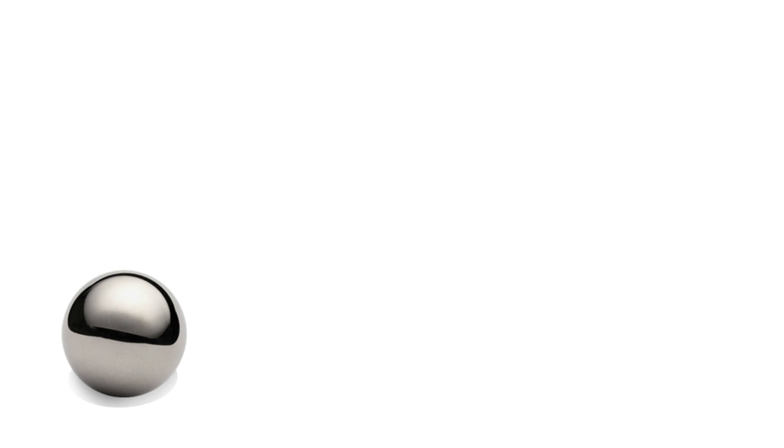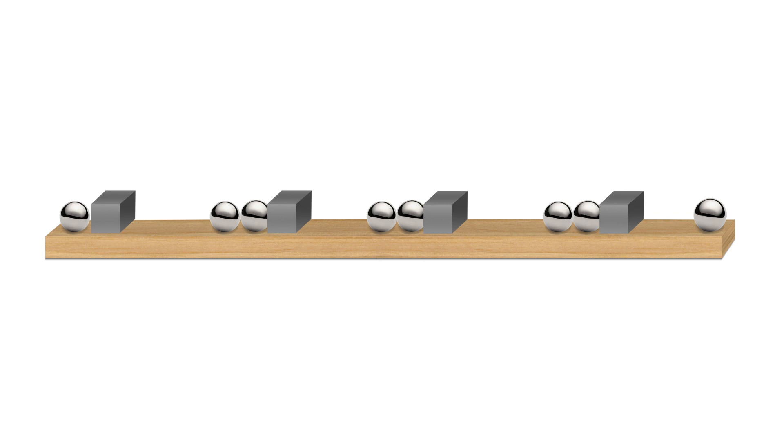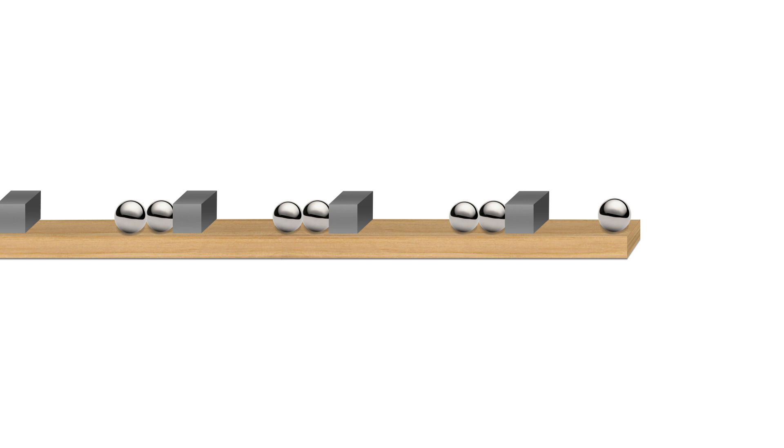Before we begin, let's see how the accelerator works. In a magnetic linear accelerator, a series of powerful magnets are lined up. Two ball bearings are then placed in pairs in front of each magnet.